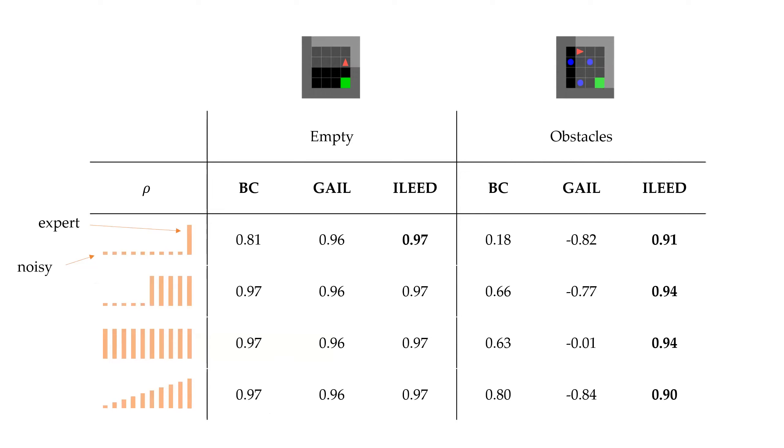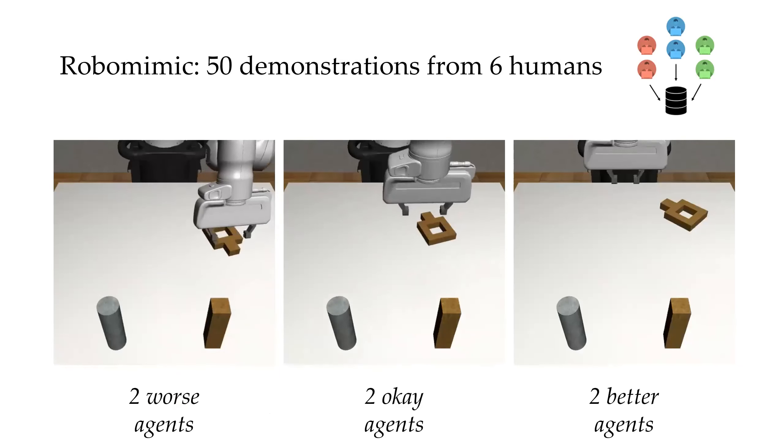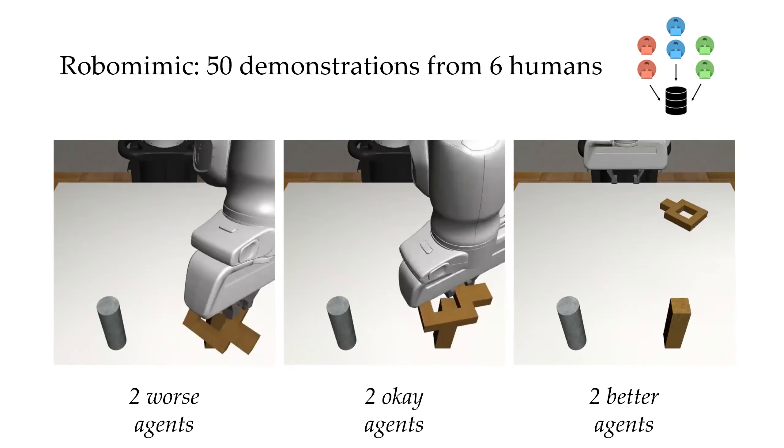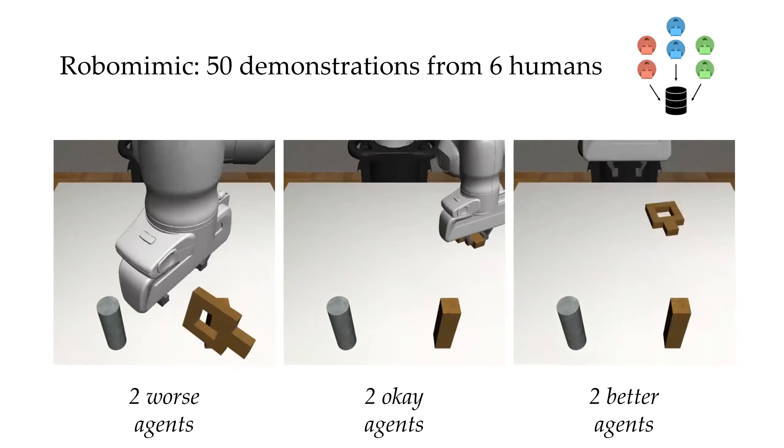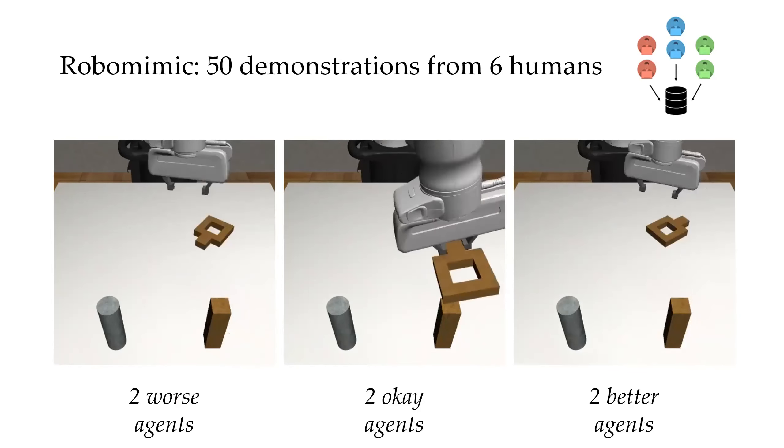But what happens when the model assumptions do not hold, say instead if we consider human data? We test this by using the RoboMimic data set, which contains 50 demonstrations from six humans with varying levels of expertise. The environment is a continuous control task where the goal is to have the robotic arm pick up a nut and place it on a rod.